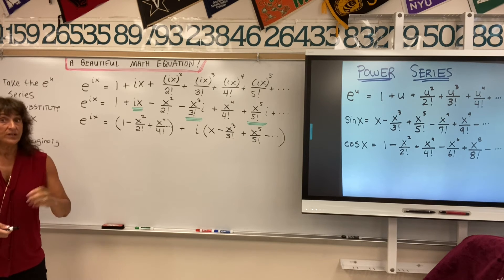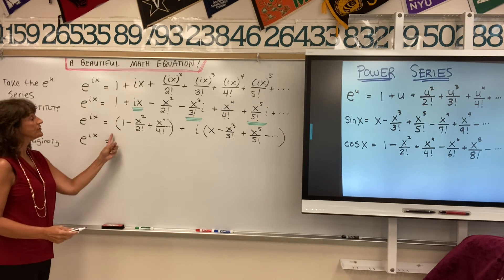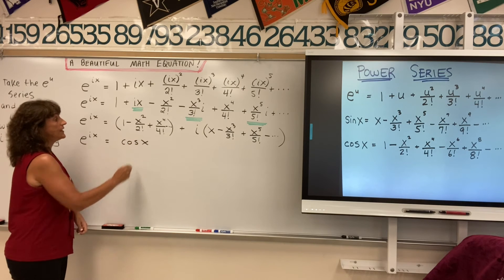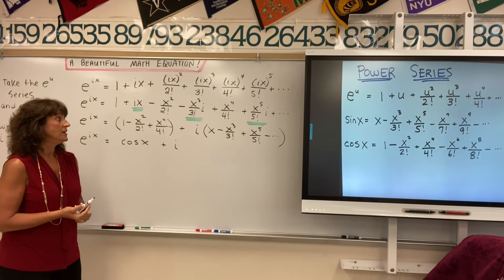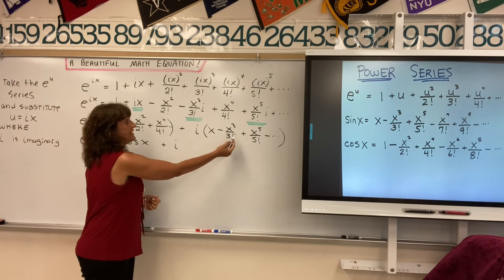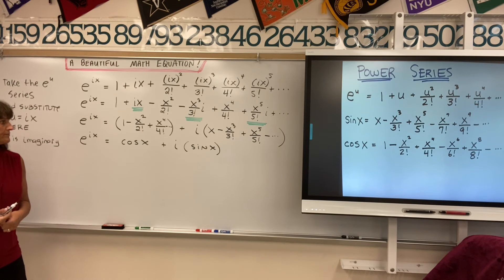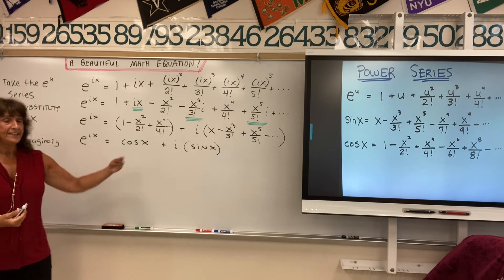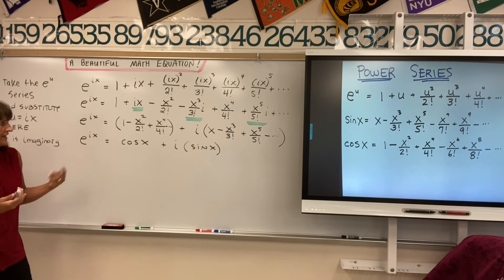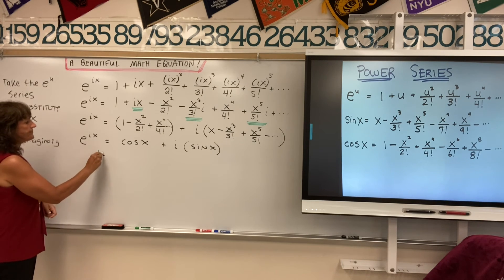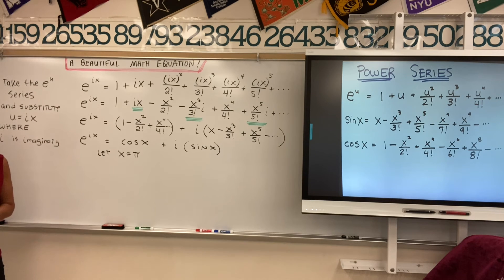So now let's substitute our sine x and cosine x functions in. We have e to the i times x equals cosine x plus i times sine x. These are proven to be true — when you learn Taylor polynomial expansion, you'll learn how to show every step. This is an identity, true for any value you plug in for x. So let's let x equal pi.